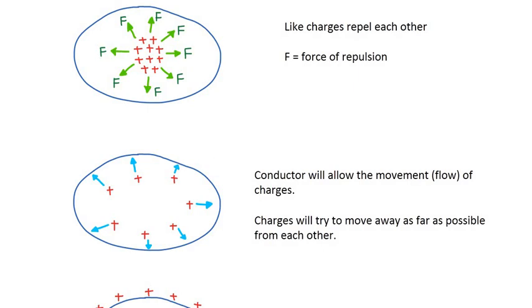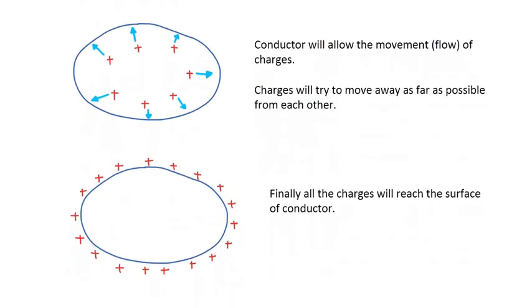Now what is the farthest distance they can go? The farthest place they can go away from each other is on the surface of the conductor. That is why finally all the charges will reach the surface of the conductor - because they want to move as far away as possible from each other.